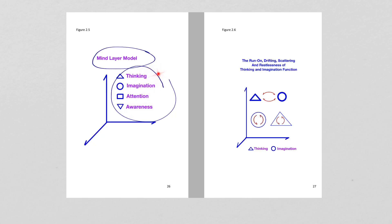For example, when we do calculations like 55 multiplied by 65 multiplied by 5 — that is thinking. Awareness is when you just are aware — it comes when you drop the thinking, drop the imaginations, and drop the attention. You're just aware. It's just like when you sit in the forest doing nothing — you're aware of all the sounds in the forest and so forth. You don't even have to pay attention. You just sit down, relax, and you're aware.